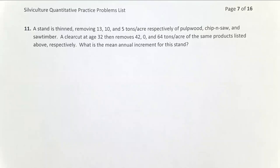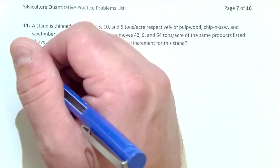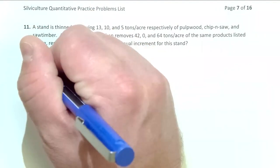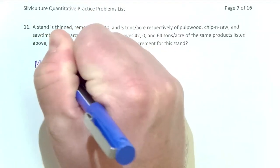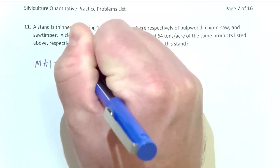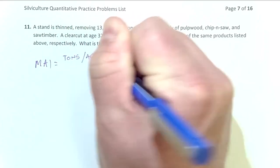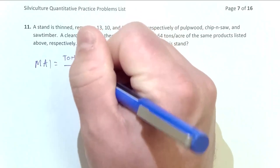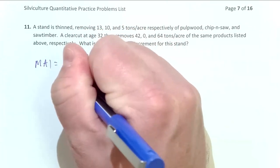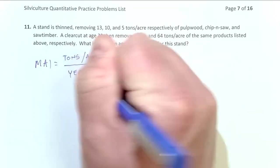When I start with mean annual increment, if I know the units on mean annual increment, that really helps me answer this problem. This really isn't too difficult a problem. So MAI, the units are tons per acre per year. This is one way to write out that fraction that helps for our problem.